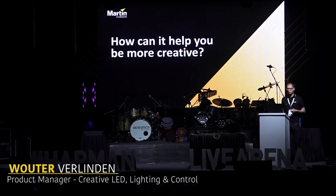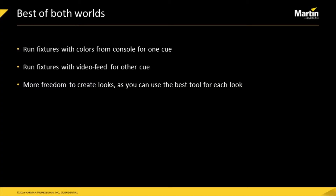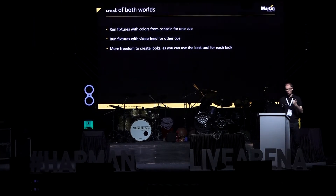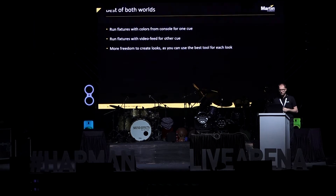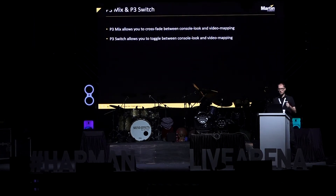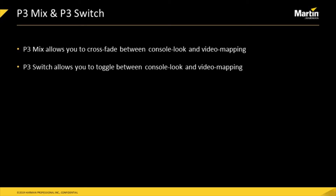How can the P3 help you be more creative? For some songs and cues you can use colors and effects from the lighting console, and for others you can use video into the fixtures. You'll see this in the light show — some parts show colors from the desk and some parts show video running across the products. This is achieved using the special P3 mix and P3 switch channels, which allow the fixture to move between showing colors from the lighting desk and showing video from the video player, so you can crossfade between those two looks.